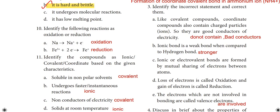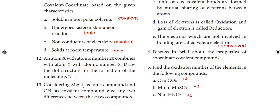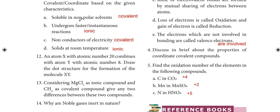Eleventh question: identify the compounds as ionic, covalent, or coordinate based on given characteristics. Soluble in non-polar solvents: covalent. Undergoes faster or instantaneous reactions: ionic. Non-conductors of electricity: covalent. Solids at room temperature: ionic.